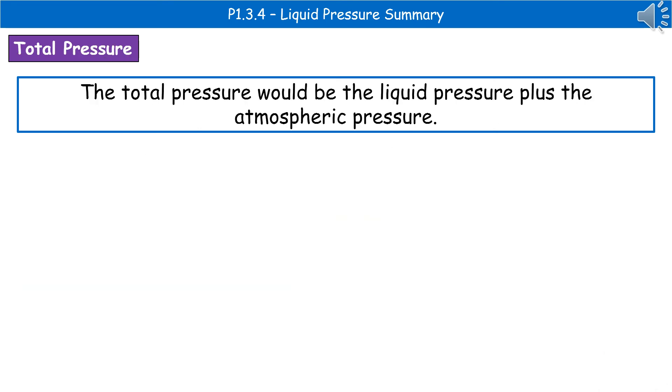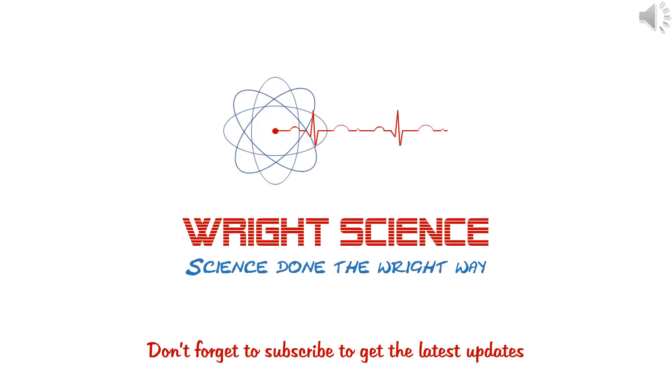The last thing to consider is what we've looked at there is just the liquid pressure. But obviously, we've also got atmospheric pressure as well that acts on these objects. So if we wanted to know the total pressure, we'd have to do liquid pressure plus atmospheric pressure. Hopefully at the end of this video, you can apply the equation for pressure in liquid at a particular depth, explain why the pressure in a liquid varies with depth and density, and calculate differences in pressure at different depths in a liquid.